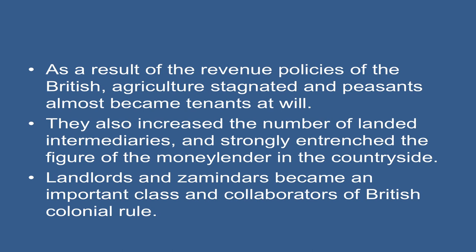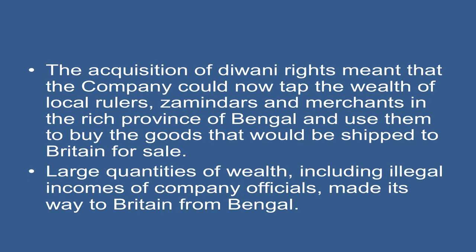As a result of the revenue policies of the British, agriculture stagnated and peasants almost became tenants at will. They also increased the number of landed intermediaries and strongly entrenched the figure of the moneylender in the countryside. Landlords and zamindars became an important class and collaborators of British colonial rule in India. The acquisition of Diwani rights meant that the company could now tap the wealth of local rulers, zamindars, and merchants in the rich province of Bengal and use them to buy goods that could be shipped to Britain for sale.